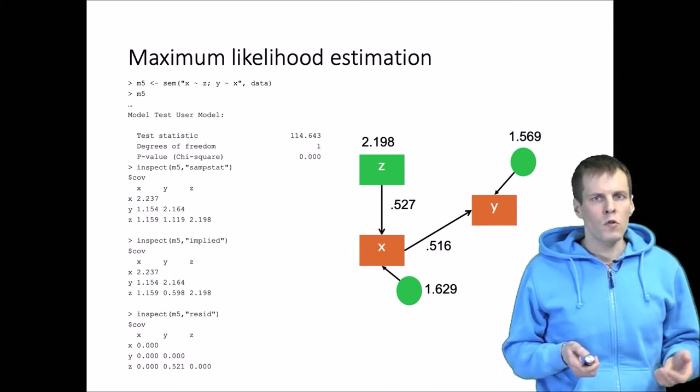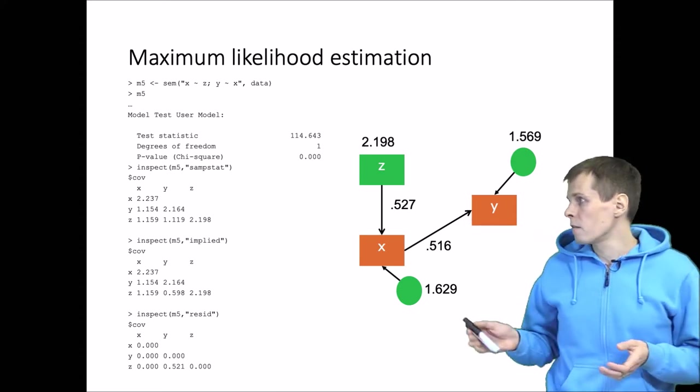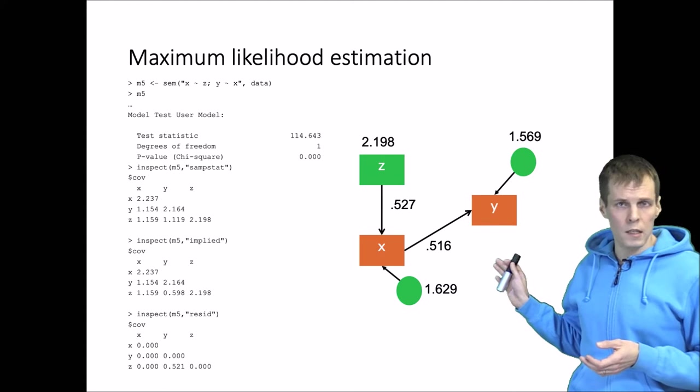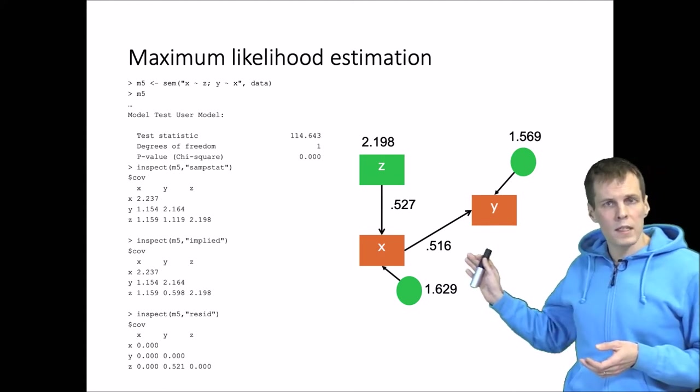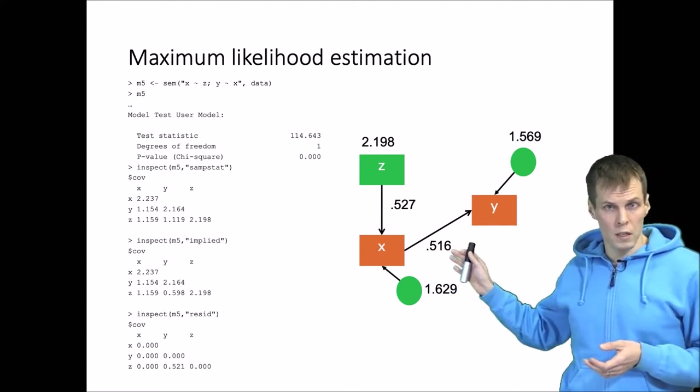Instead, what we do is that we have some starting values. So we have an initial guess, for example based on our two stage least squares estimates, and we set the model parameter values to the initial guess.